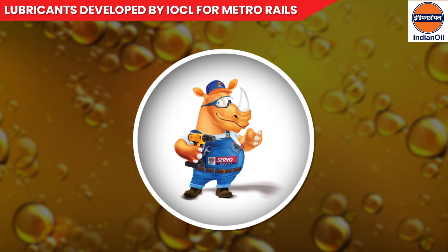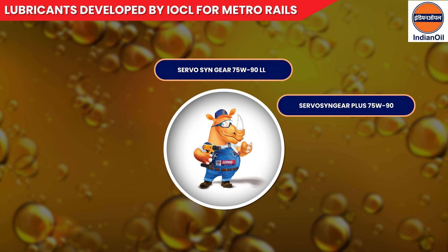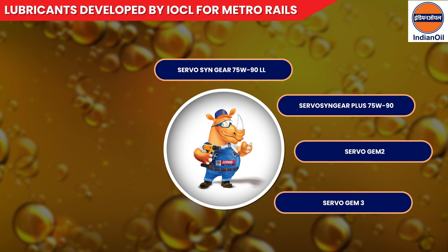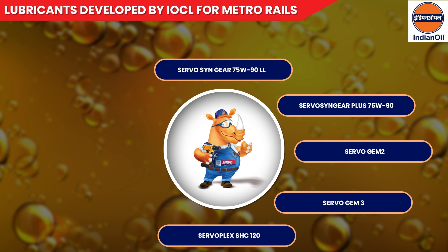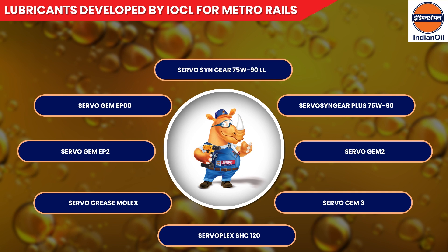Now let us look at lubricants developed by IOCL for metro rail. Based on the applications and different components of metro rail, lubricants developed by Indian Oil include: Servosin Gear 75W-90 LL, Servosin Gear Plus 75W-90, Servo Gem series, Servo Gem RR3, Servo Plex SHC 120, Servo Grease Molex, Servo Gem EP series, and Servo Grease Miracle series.